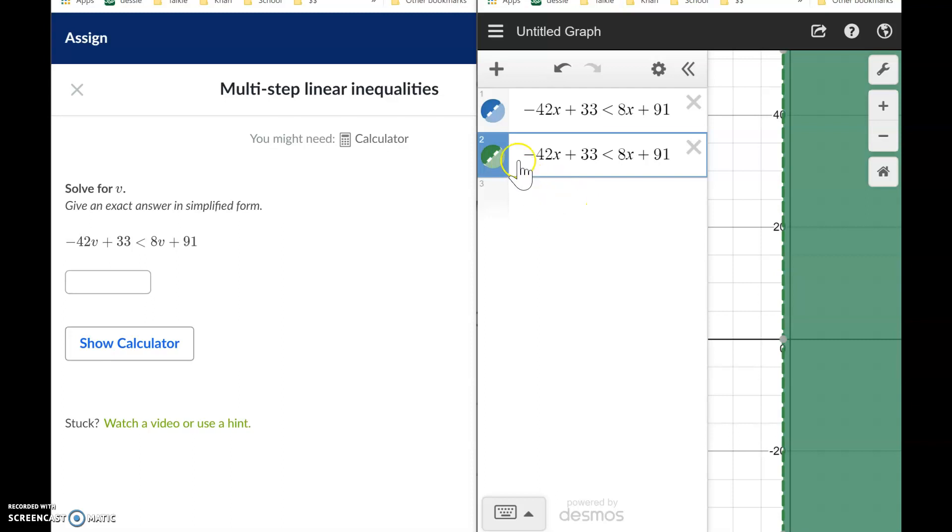I'm looking at this equation and I've got variables on both sides. I want to choose one side to keep the variable on, one side to eliminate it. So I'm going to keep it on the left side.